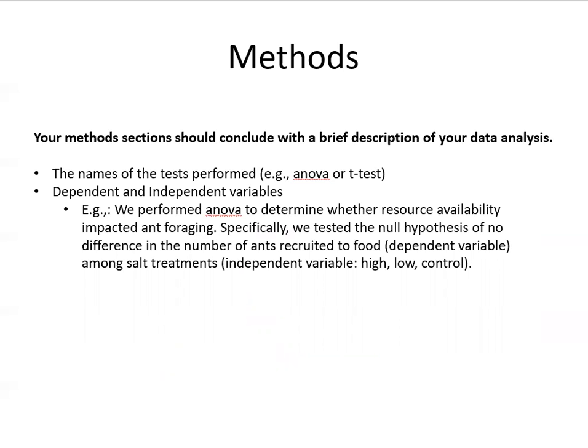An example would be: we performed an ANOVA to determine whether resource availability impacted ant foraging. Specifically, we tested the null hypothesis of no difference in the number of ants recruited to food — which is your dependent variable — among salt treatments, which is your independent variable, with high, low, and control conditions.